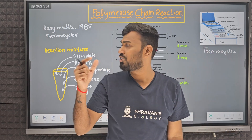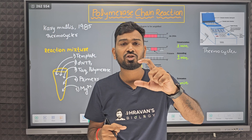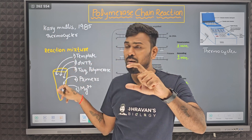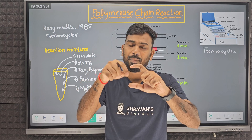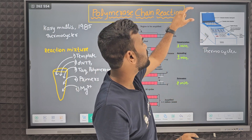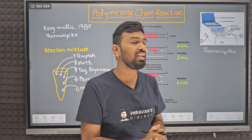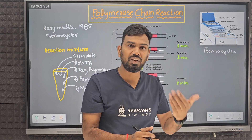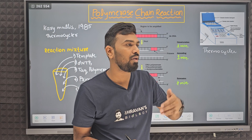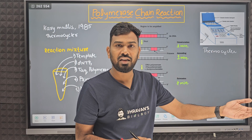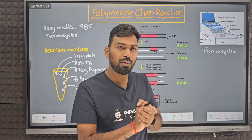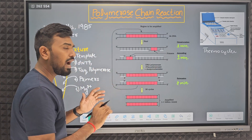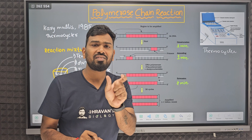The machine will make a reaction mixture, and in that reaction mixture you will give the required components. You will have to run 30 cycles or 50 cycles — you give the command. So if you give a reaction mixture how you want to make a copy, you will make copies of the desirable gene.